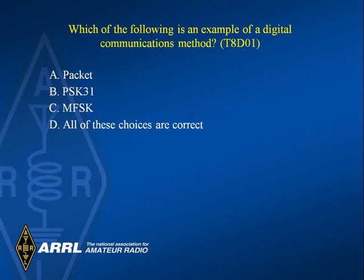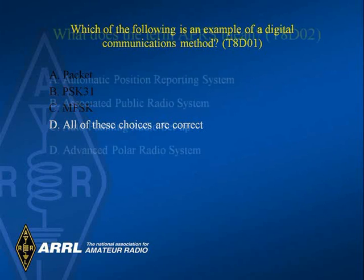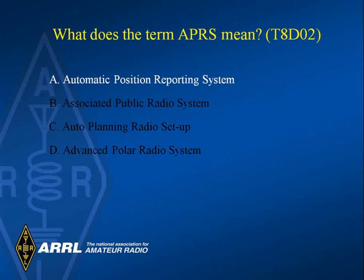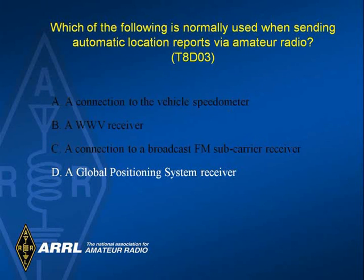Which of the following is an example of a digital communications method? Answer D: All of these choices are correct. What does the term APRS mean? Answer A: Automatic position reporting system. Which of the following is normally used when sending automatic location reports via amateur radio? Answer D: A global positioning system receiver.